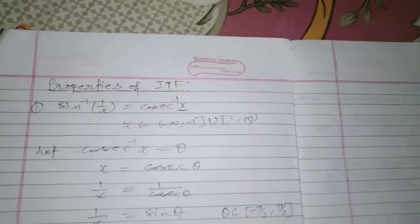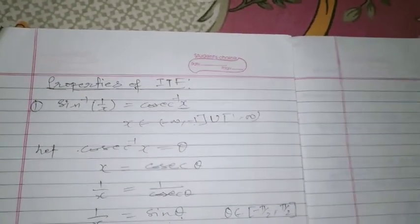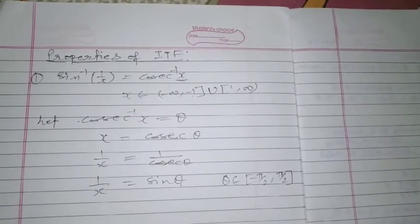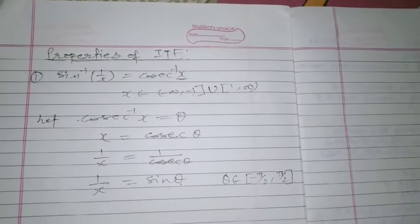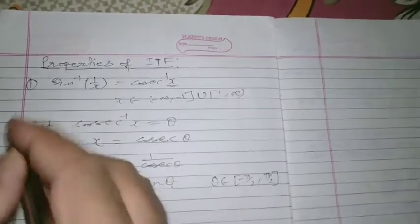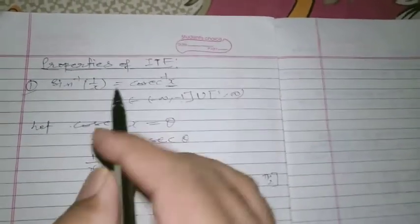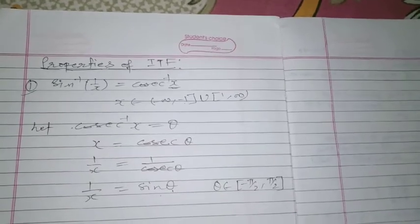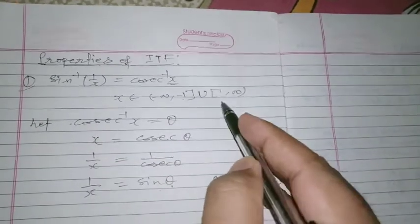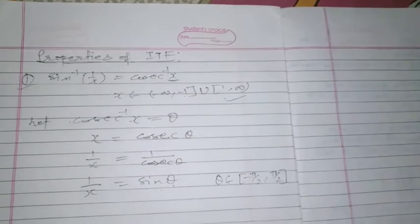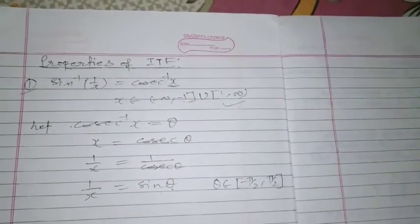Hello students, in this video we'll discuss the properties of ITF. In the previous video we already discussed some properties of ITF. In this video: sin⁻¹(1/x) is equal to cosec⁻¹(x), and x belonging to minus infinity to minus 1 union 1 to infinity.